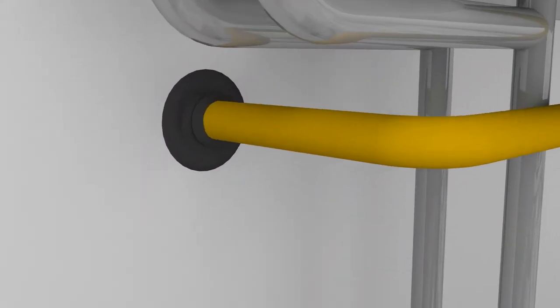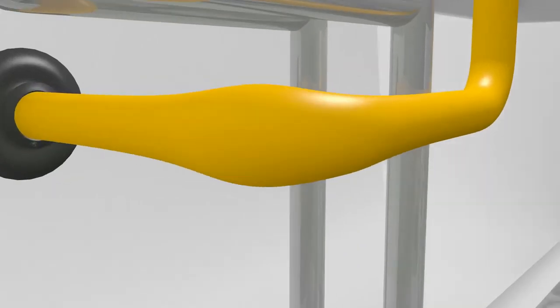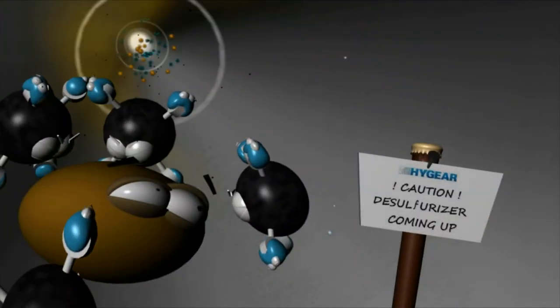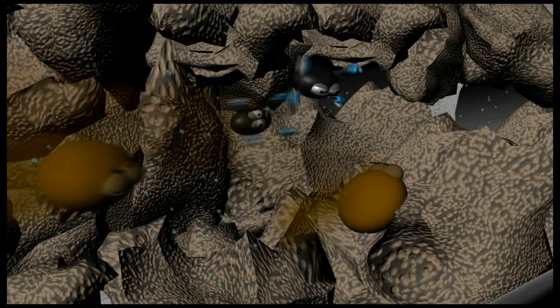Natural gas, which consists of methane molecules and impurities like sulfur, is led into the boiler. The smelly sulfur is harmful for the system and is therefore removed in the desulfurizer.